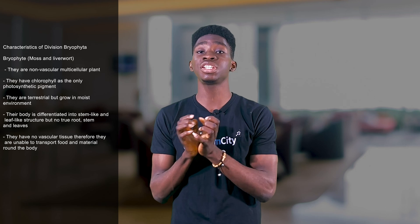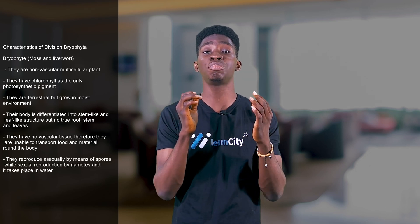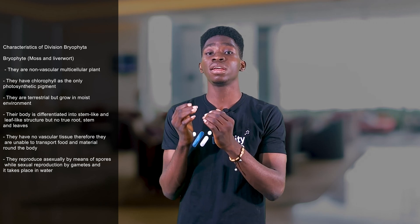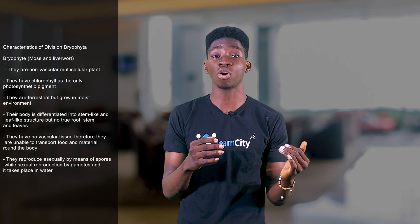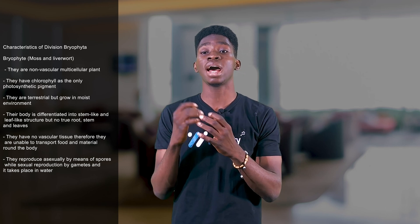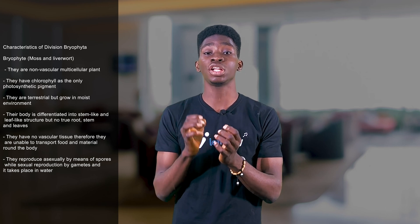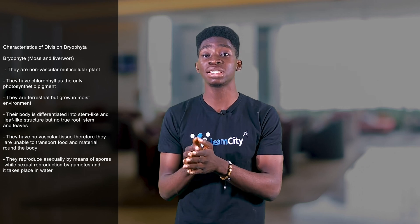Another characteristic of organisms found under division Bryophyta is that they reproduce asexually by means of spores, and their sexual reproduction is done by diffusion of gametes. Their asexual reproduction uses spores, and their sexual reproduction is by means of gametes, with that reproduction taking place in water.